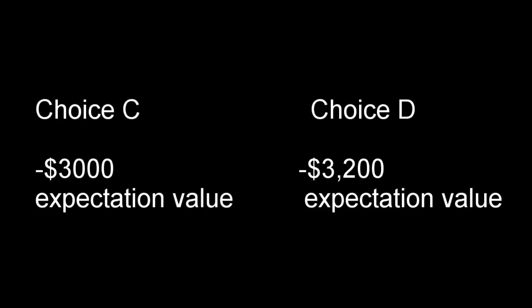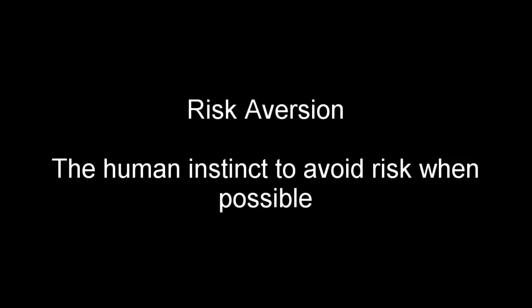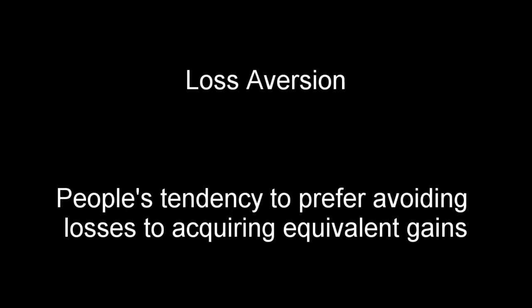So what drives us to make the statistically wrong choice in both scenarios? The first scenario shows us that people are willing to take a sure gain over a gamble for more money. This is an example of risk aversion — the concept that humans will generally try to avoid risk whenever possible. But in the second scenario, players have the potential for loss, so loss aversion kicks in. Since there is a chance the player could lose nothing, our brains gravitate to option D in the hopes of avoiding all loss.